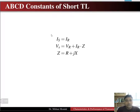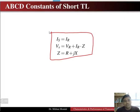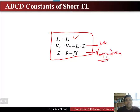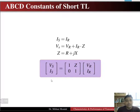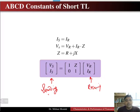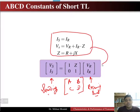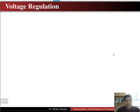The three governing equations for a short transmission line allow us to express sending end quantities in terms of receiving end quantities using ABCD parameters. Writing the equations in matrix format, we get A = 1, B = Z, C = 0, and D = 1. These are the ABCD parameters of the short transmission line.